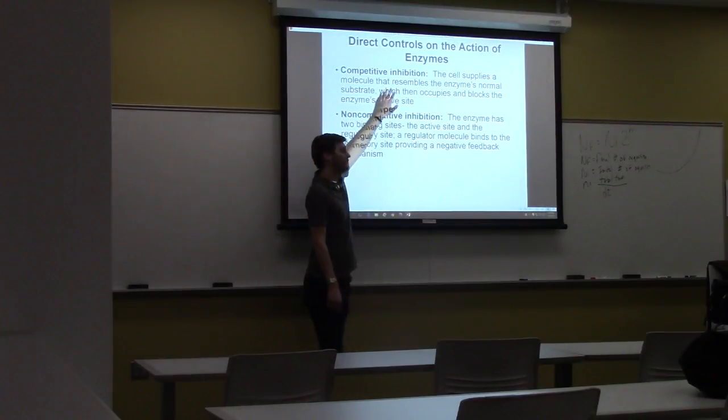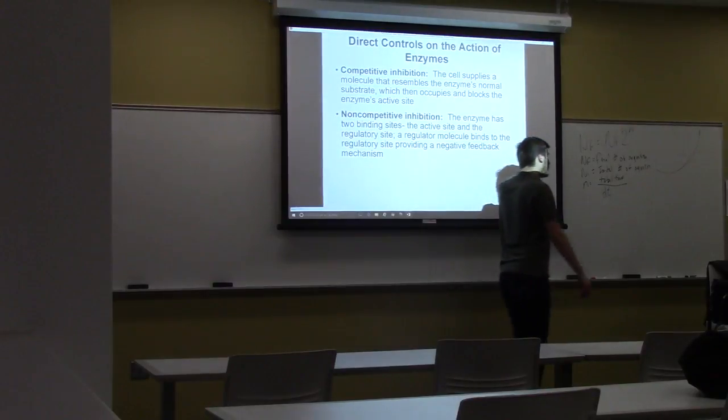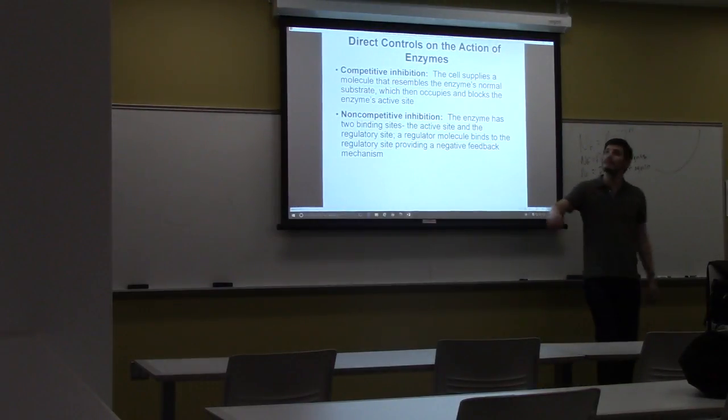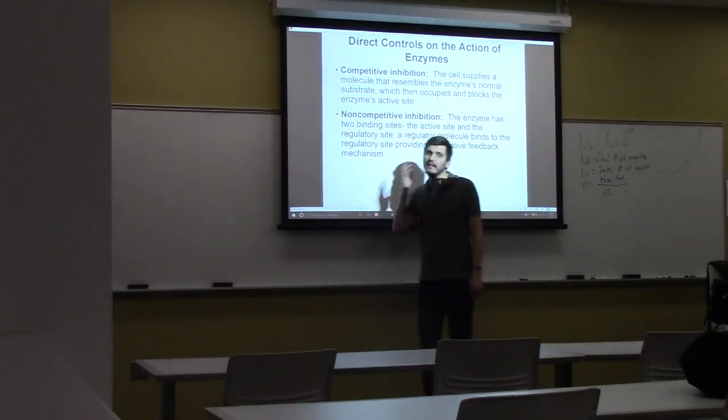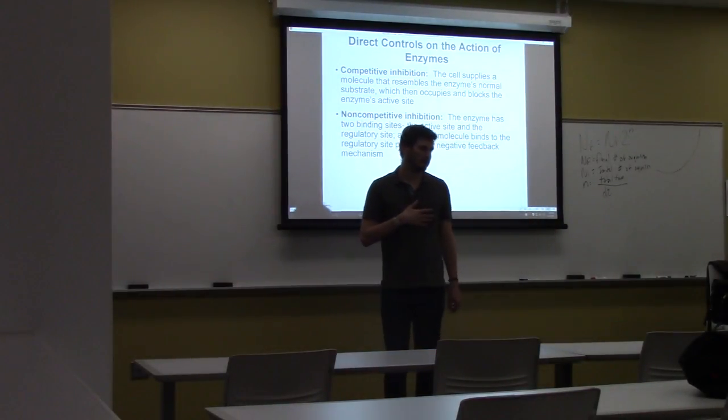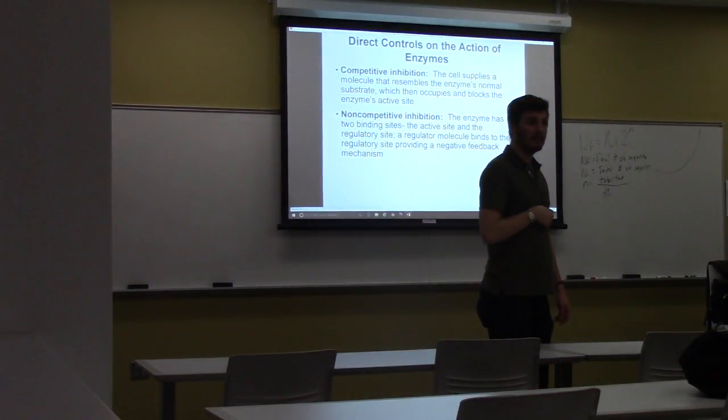One way is to inhibit them. Remember, this is where you stop the enzyme from functioning, but you don't get rid of it. There's two types of inhibition, competitive and non-competitive. What is competitive inhibition? It blocks the active site. So you have a molecule you make, blocks the active site, doesn't work.